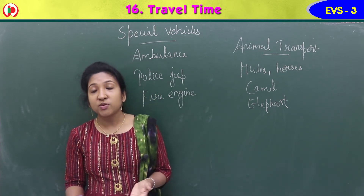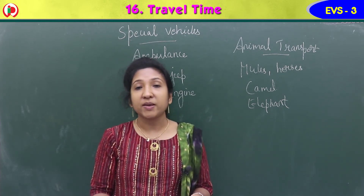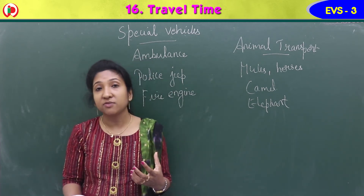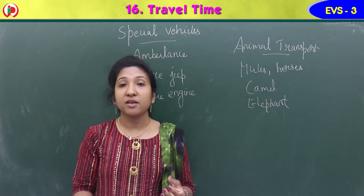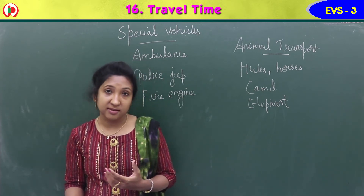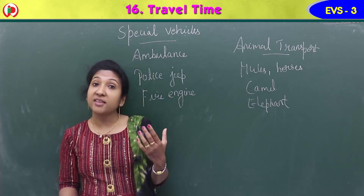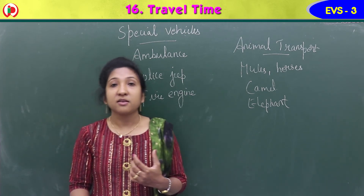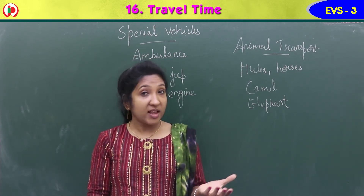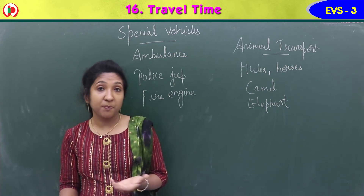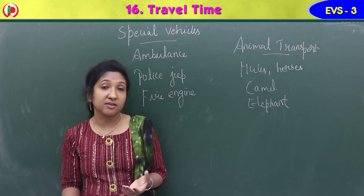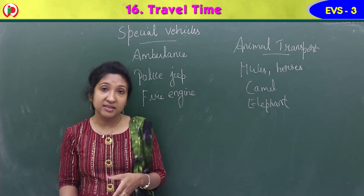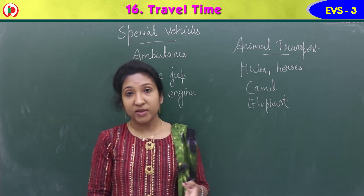We also learned about air transport — vehicles that travel in air, like aeroplanes and helicopters. They are the fastest means of transport. Then water transport includes boats, ships, steamers, and small boats called ferries to travel within a short distance.